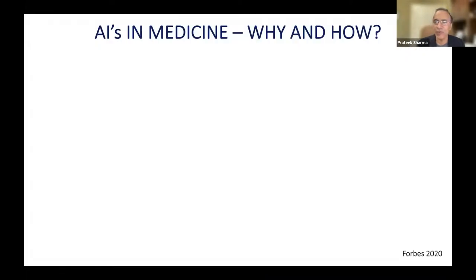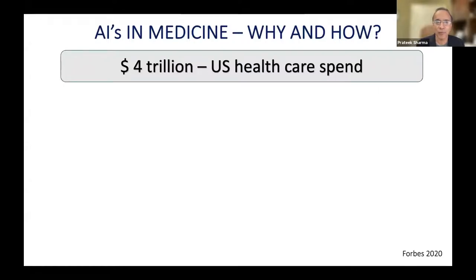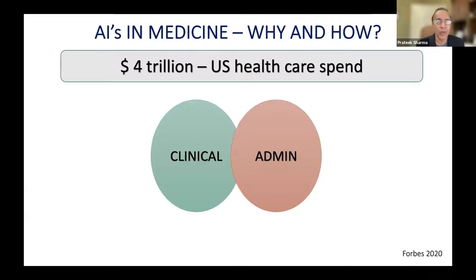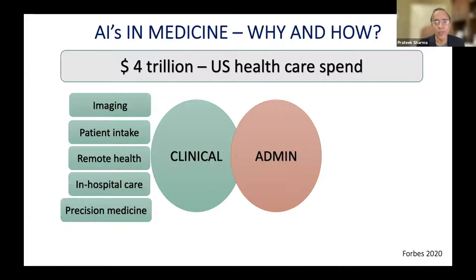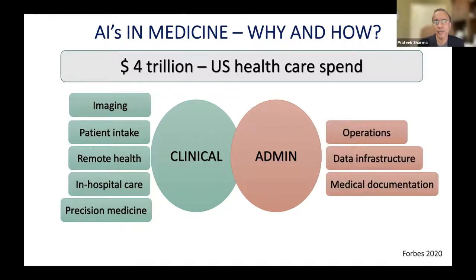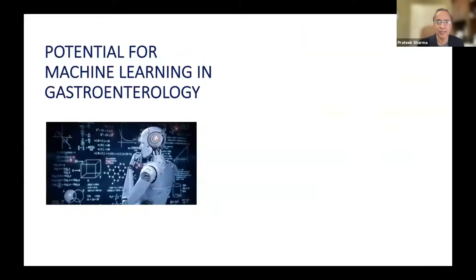I'll be focusing on colonoscopy, but as background — why are we all interested in artificial intelligence and why is it making a splash now, when it was first invented in the 1950s? If you look at where it can impact healthcare — a huge expenditure for our GDP — it's several-fold, from imaging to precision medicine on the clinical side. We also forget the impact it can have on the administrative side, such as building platforms for scheduling, which would help us focus on clinical work rather than mundane tasks.